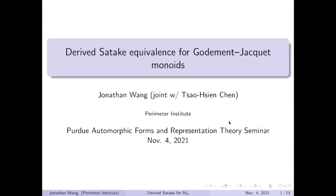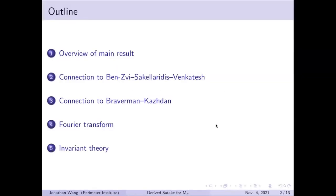Hello everyone. Today we're glad to have Dr. Jonas Wang from the Perimeter Institute give a talk on the right subject equivalence for Godement-Jacquet monoids. Thanks very much for the invitation. I'll be talking about joint work with Chao-Xian Chen, and the paper is in preparation. I'll give some overview of the main result, which is a geometric version of local unramified Langlands theory, and how it fits into two general frameworks.